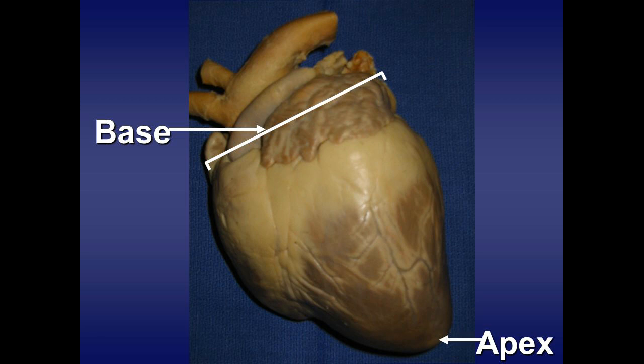The base of the heart receives great veins and sends out great arteries, and therefore it receives the hilum of the heart. Opposite to the base is the apex, which is completely formed by the left ventricle, and its position is caudoventrally.